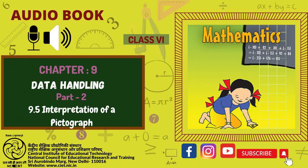Observe this pictograph and answer the following questions. A. Which class has the minimum number of girl students? B. Is the number of girls in class 6 less than the number of girls in class 5? C. How many girls are there in class 7?